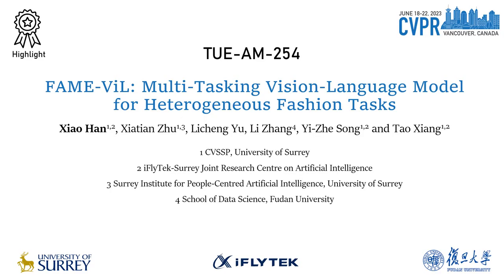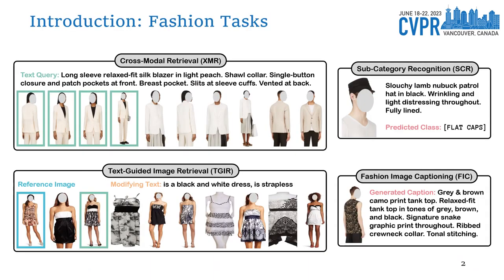Welcome to our highlighted poster session. I am going to present our work, FameVille, a Multitasking Vision-Language Model for Heterogeneous Fashion Tasks. Our work is a parameter-efficient and effective learning method for fashion-focused vision and language tasks, which utilizes a task-versatile architecture and a stable multi-task training strategy to overcome parameter inefficiency and exploit inter-task relatedness. This work is done by the University of Surrey, iFlytech, and Fudan University together. In the fashion domain, a wide range of real-world vision and language tasks exist, with applications in various e-commerce scenarios such as improving product discoverability, enhancing seller-buyer engagement, and increasing customer conversion rates. We specifically focus on four popular fashion tasks, including cross-modal retrieval, which aims to retrieve the most relevant image or sentence from a large pool of candidates.